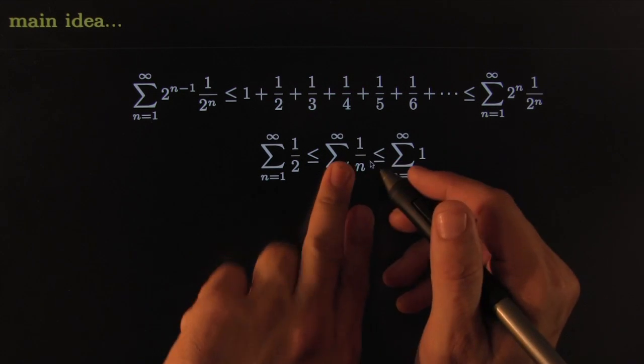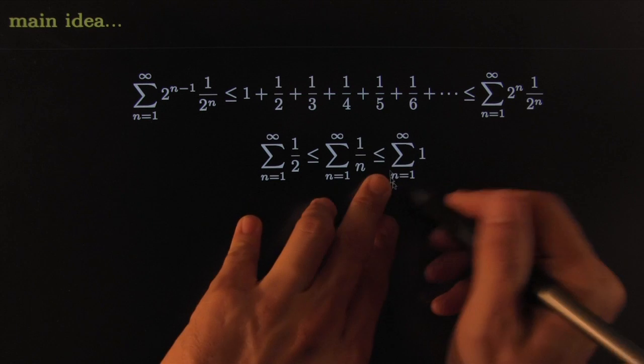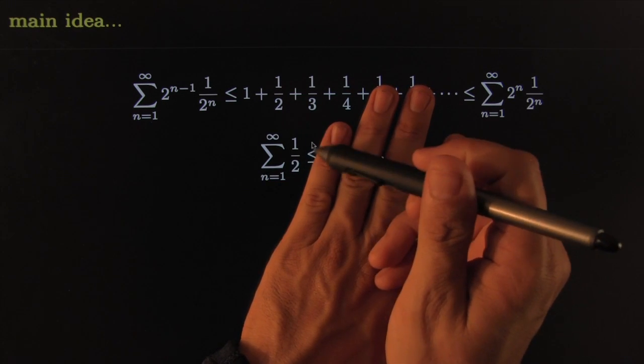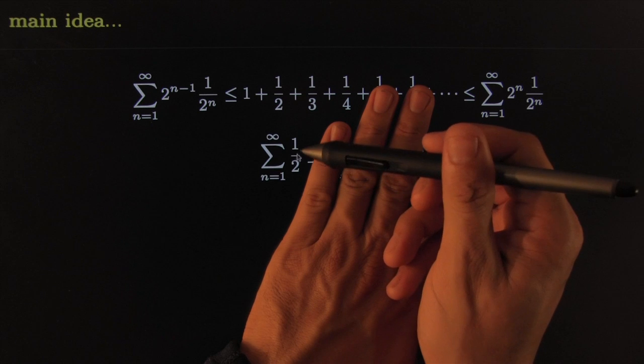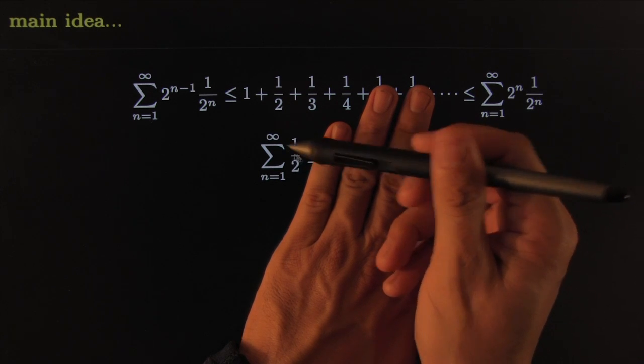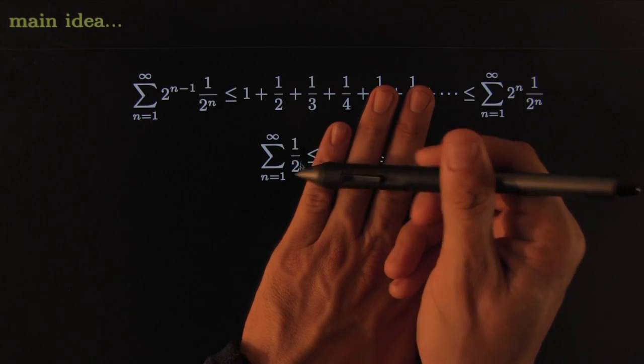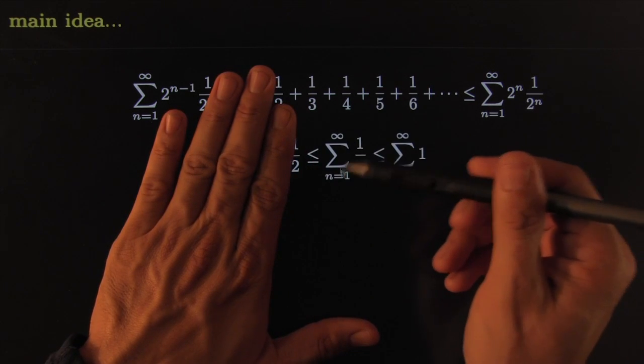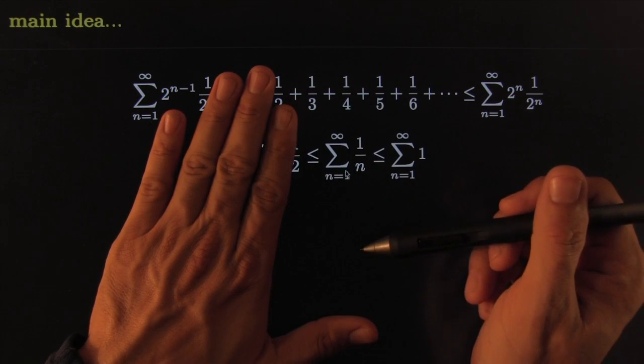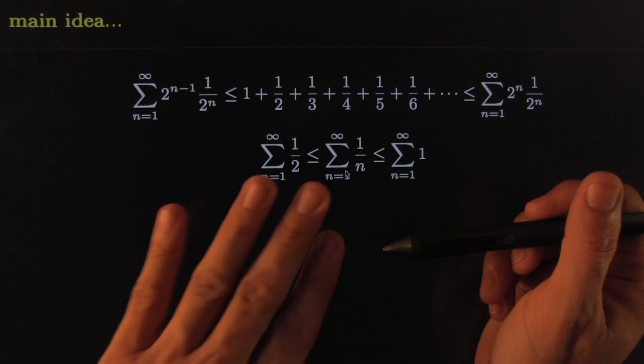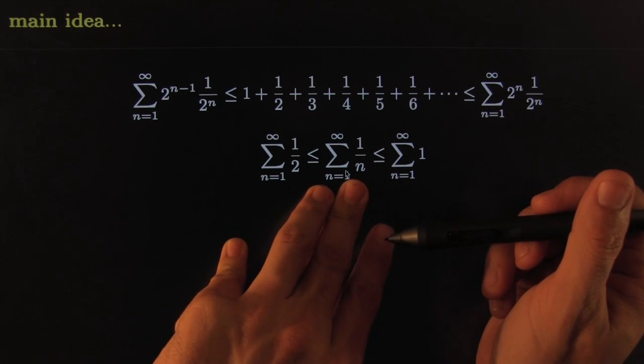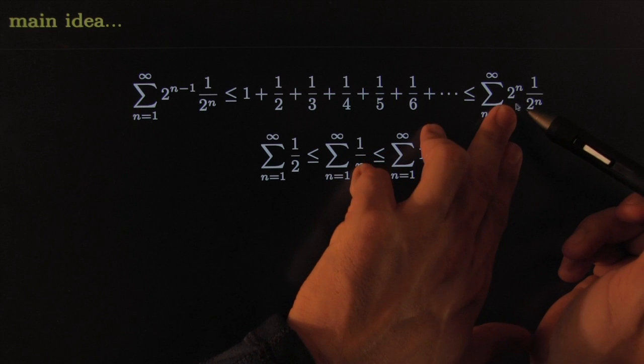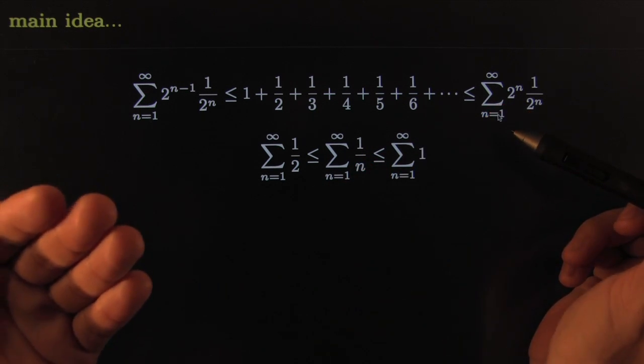It tells you that the harmonic series is squeezed between this one and that one, but of course that one is ridiculously divergent, because you're adding one half plus one half plus one half infinitely many times. So that's clearly going to be infinity, and this one's even larger, so it must be infinite. It may be tempting to do it that way, but it's not the most powerful thing to do. Instead of simplifying, every time you simplify, you hide patterns.